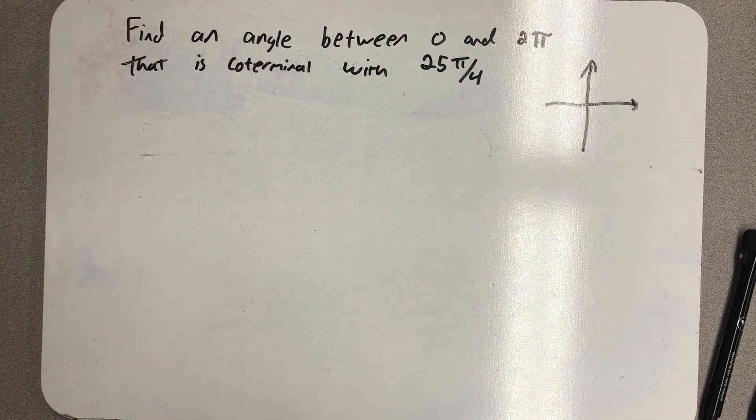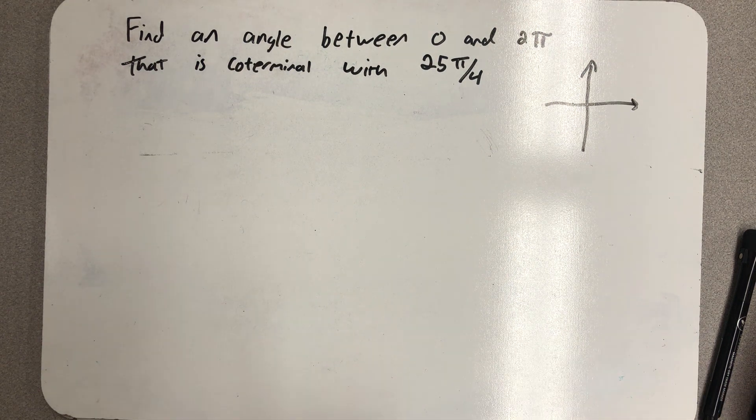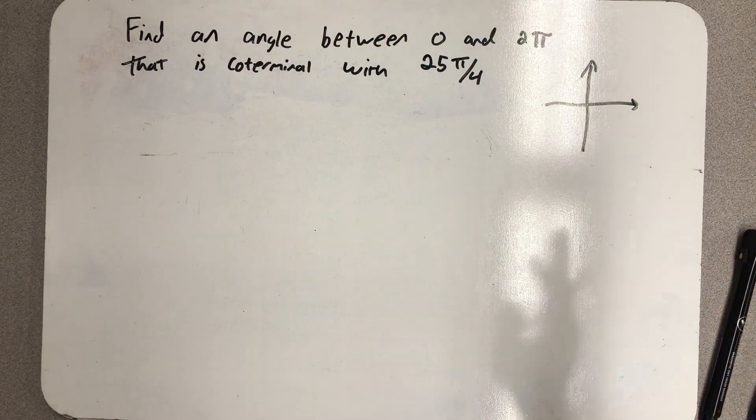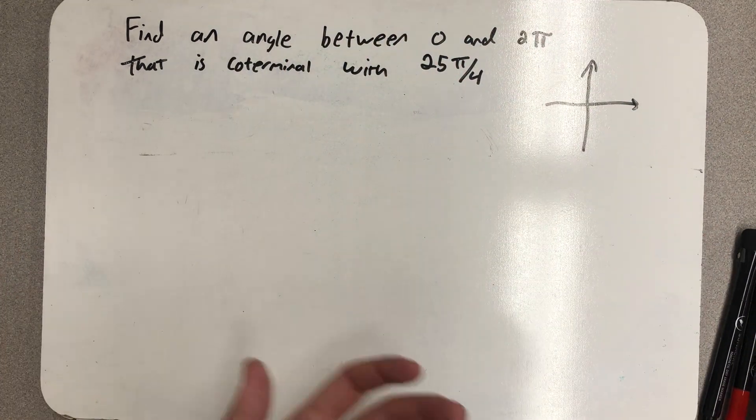And I think you can already see where we're going with this. If I know where 25π fourths is coterminal with between 0 and 2π, I'll have an easier time drawing the angle.